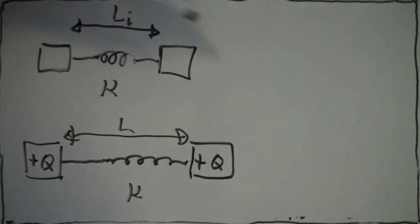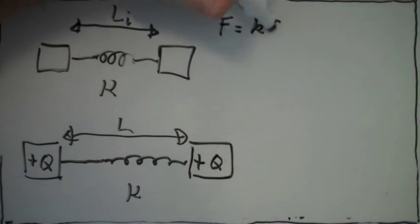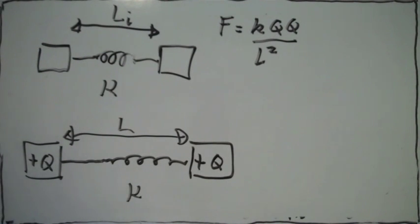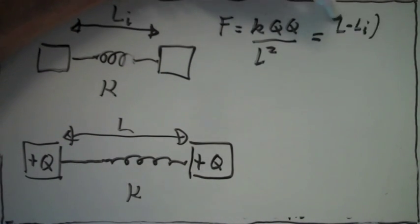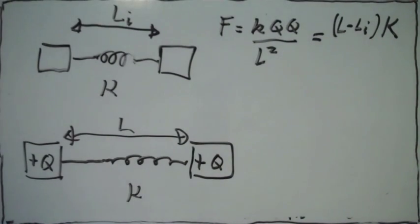We want to find what the charge is. The force of electrical repulsion between the two blocks has to equal the force of the spring pulling them together, which is the distance the spring is stretched times k, the constant of the spring.